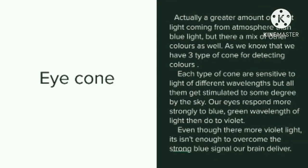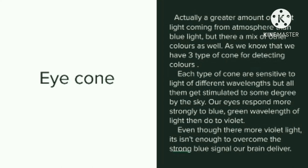We may have one question that should be asked here. If the shorter wavelength light is scattered more efficiently, why does the sky not appear violet? The answer is: there actually is a greater amount of violet light coming from the atmosphere than blue light, but there is also a mix of other colors as well. And because your eyes have three types of cones for detecting colors, along with the monochromatic light involved, it's the signal from all of them that needs to be interpreted by our brains when it comes to assigning color.